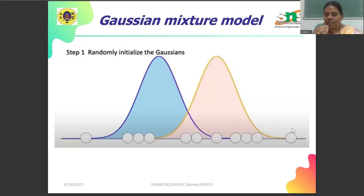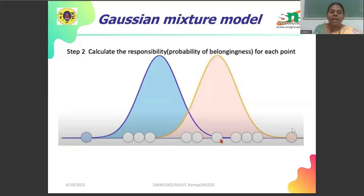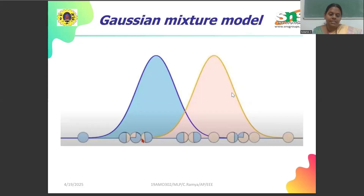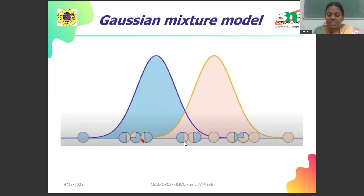Here is an easy understanding of the GMM calculation. In step one, we randomly initialize the Gaussian values — we can see two Gaussian functions of blue and pink color. In step two, we calculate the responsibility, that is the probability of belongingness. The data points are assigned probabilities of belonging to either the blue or the pink category. For example, a point might have 60% probability of belonging to the blue category and 40% to the pink category.